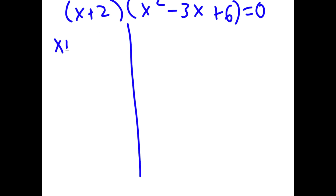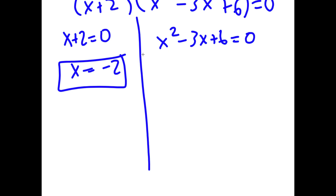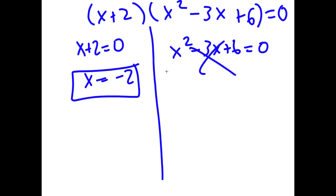Now I get two equations: x + 2 = 0, giving x = negative 2; and x squared minus 3x + 6 = 0, which requires the quadratic formula. The discriminant turns out to be negative, so the square root is of a negative number, meaning that solution is rejected. My only answer is x equals negative 2.